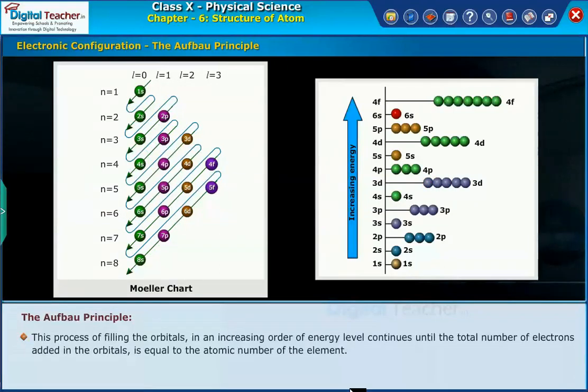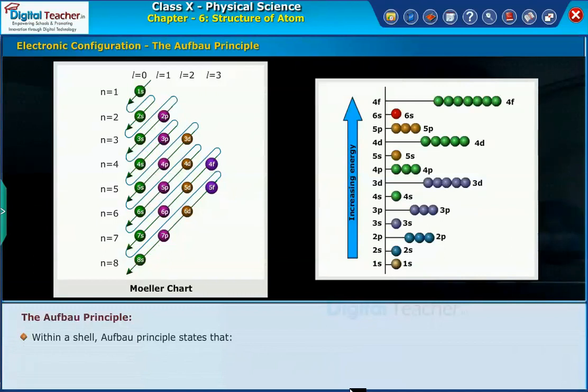This process of filling the orbitals in an increasing order of energy level continues until the total number of electrons added in the orbitals is equal to the atomic number of the element.